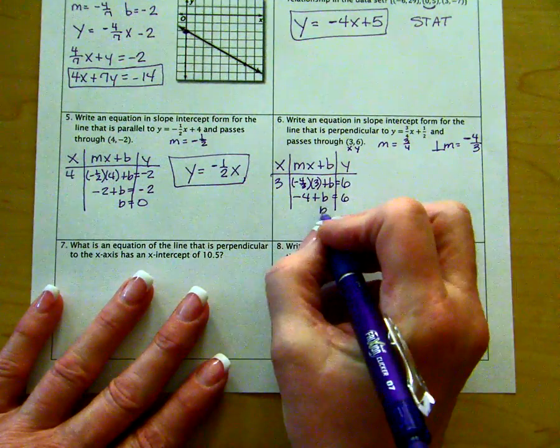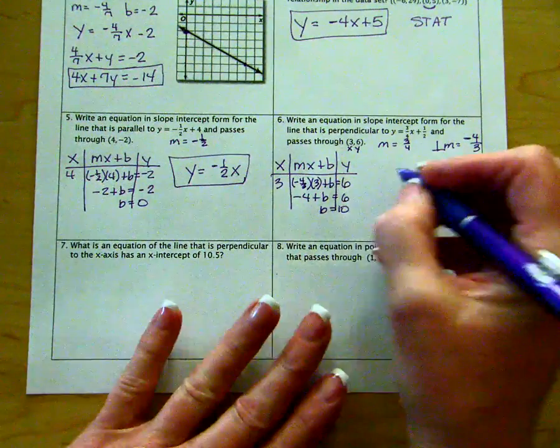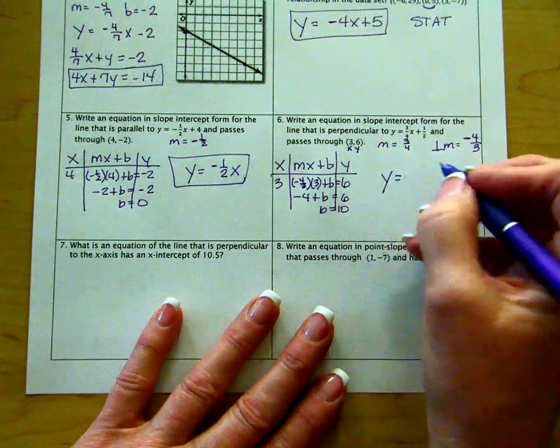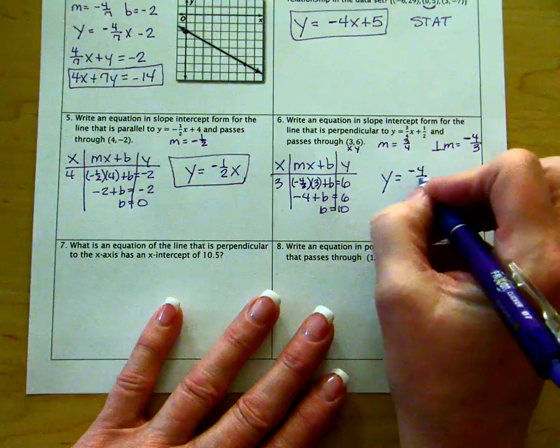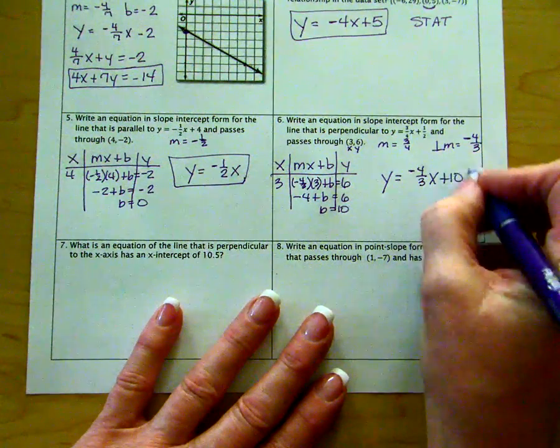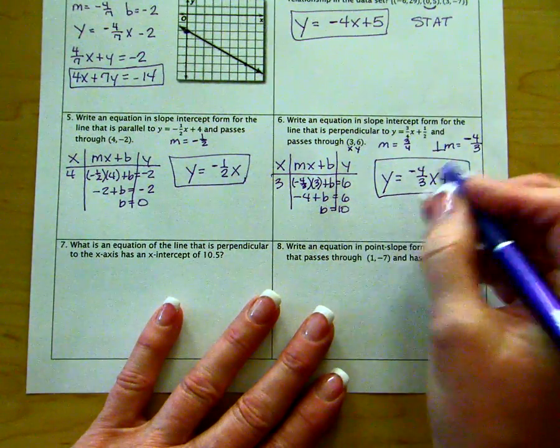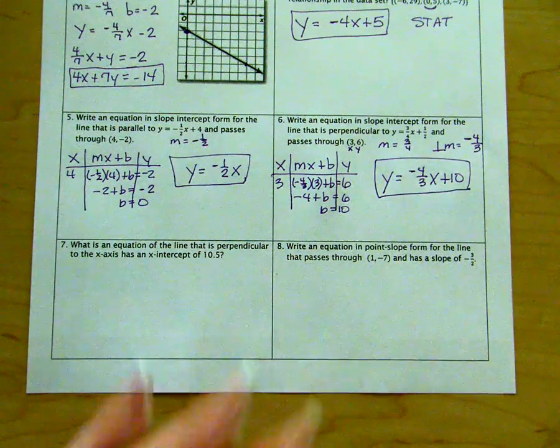We add four to both sides, so we get a y-intercept of 10. So our equation is y equals negative four-thirds x plus 10. This is the equation of a line that is perpendicular to the line that they gave us.